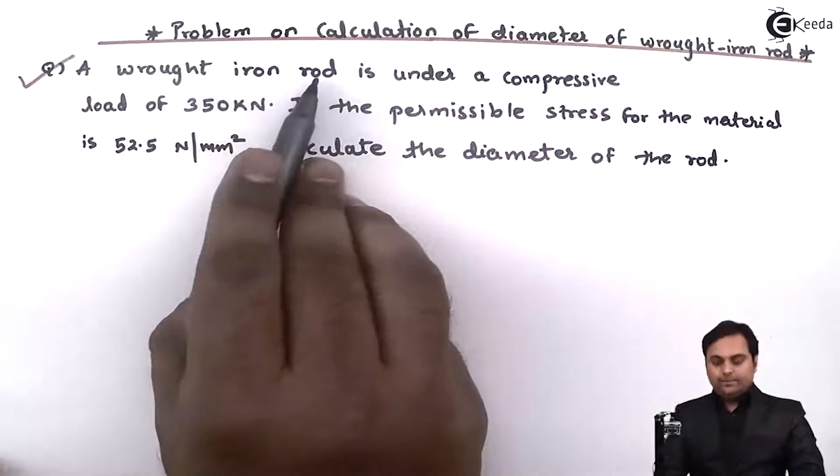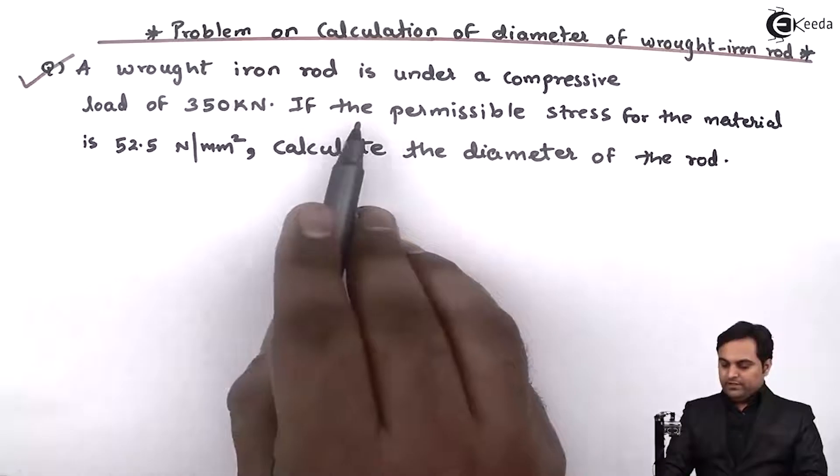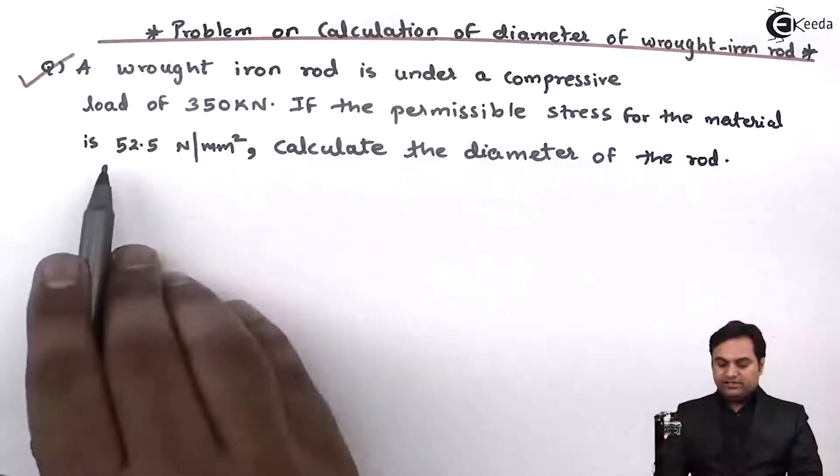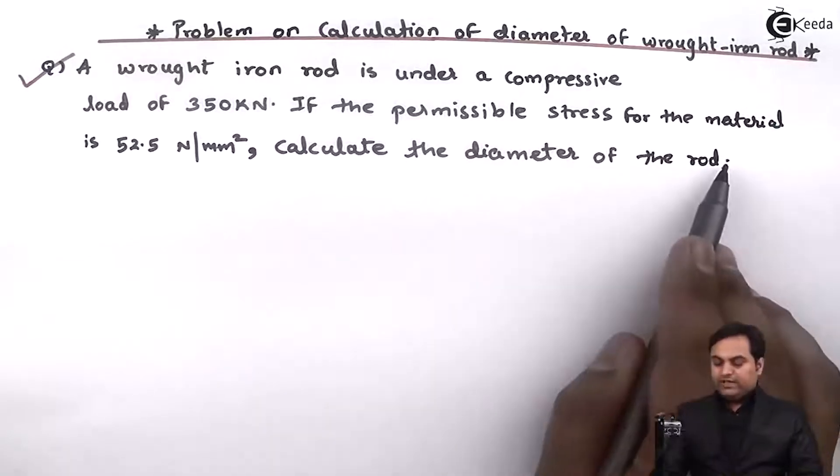A wrought iron rod is under a compressive load of 350 kilonewton. If the permissible stress for the material is 52.5 Newton per mm square, calculate the diameter of the rod.